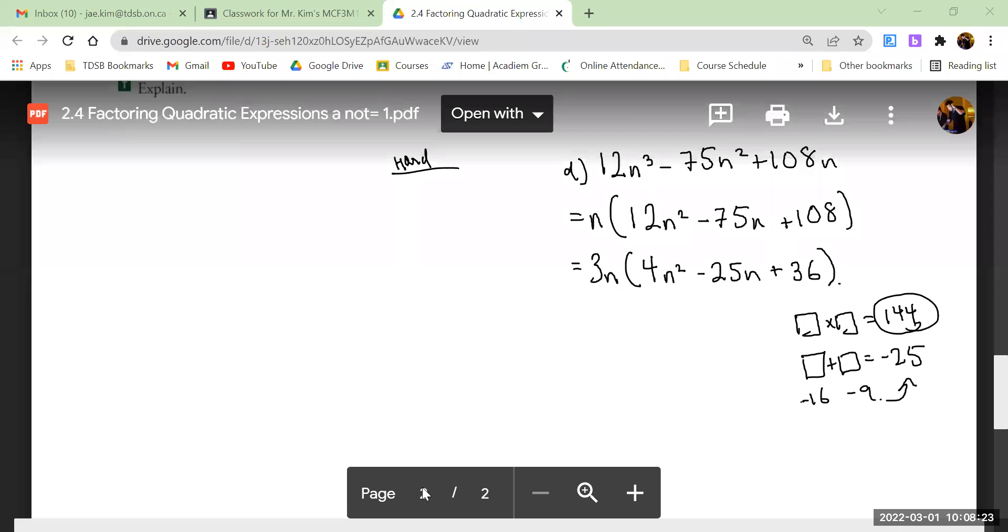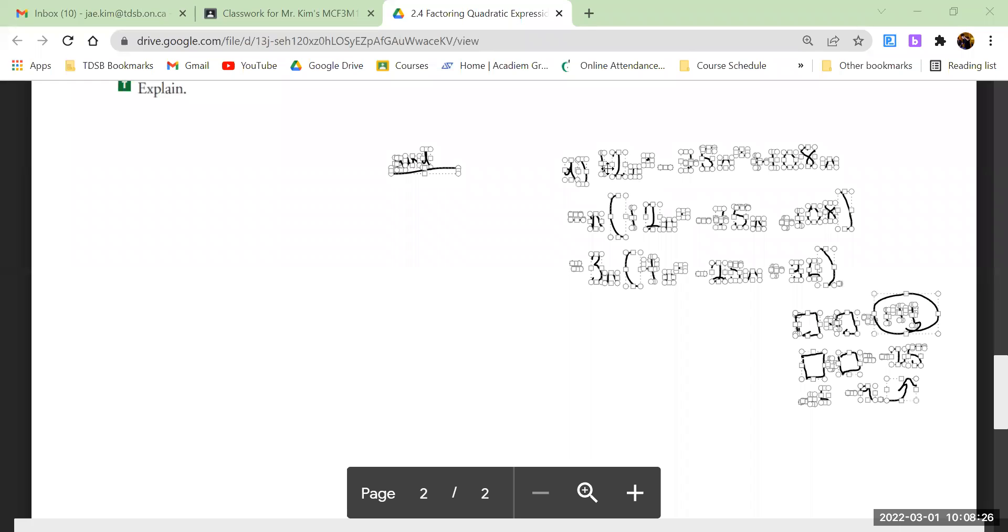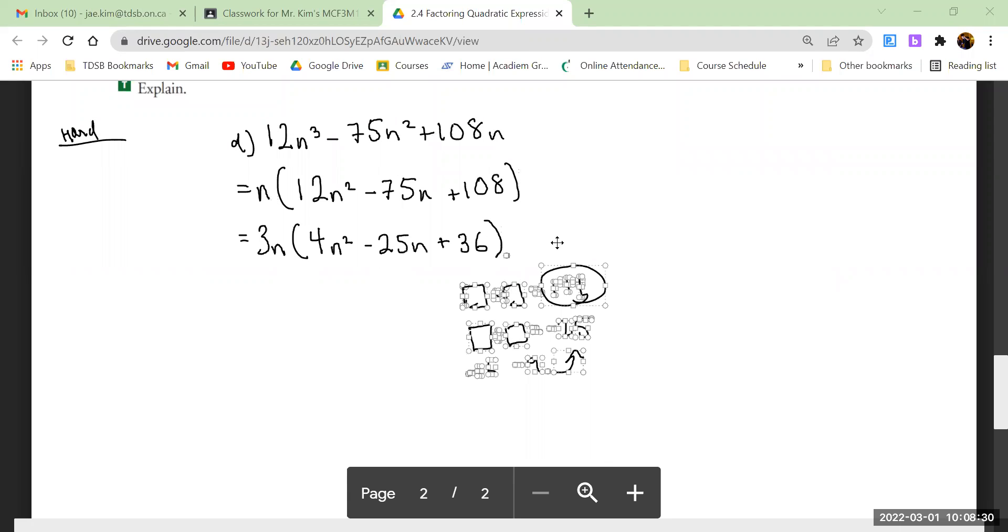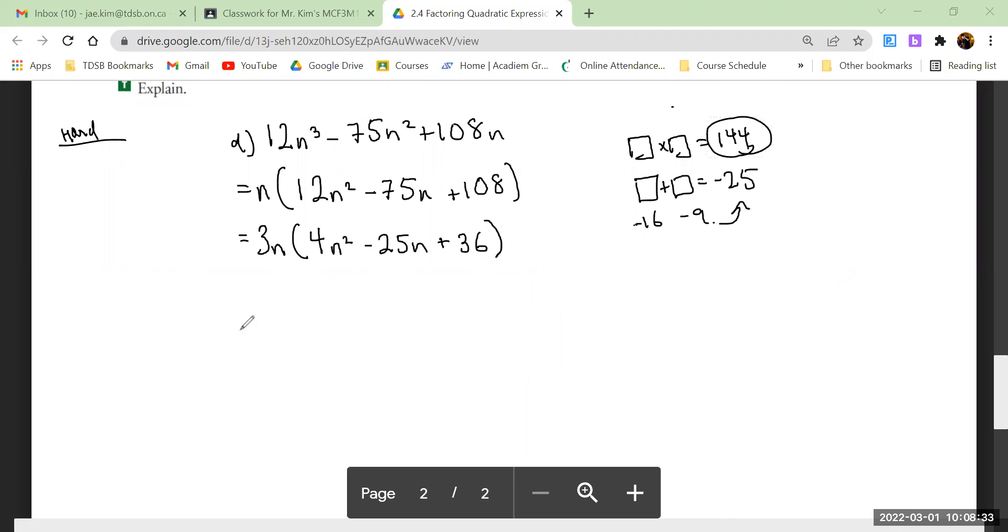So let's do this. The rest is mechanical. I'm going to leave 3n off on the side. I'm going to focus on this part: 4n² - 16n - 9n + 36. And I will highlight that as I did before. That's step 2.